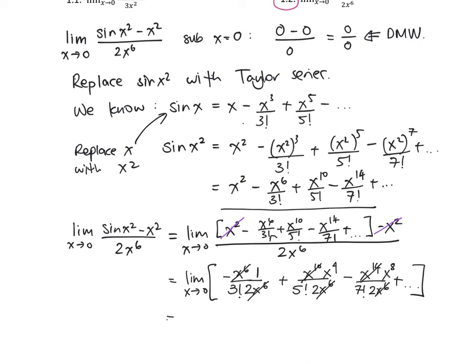Let's write that out clearly. We've got minus 1 over — now 3 factorial is 6, times 2 is 12 — so minus 1 over 12, plus x to the 4 over 5 factorial times 2, minus x to the 8 over 7 factorial times 2, and so on.